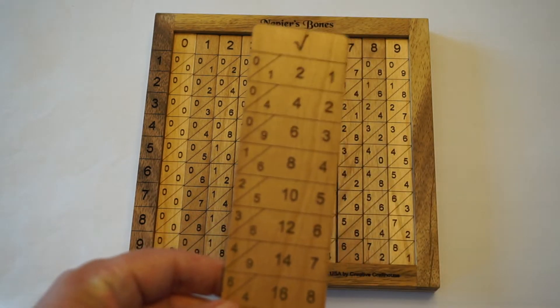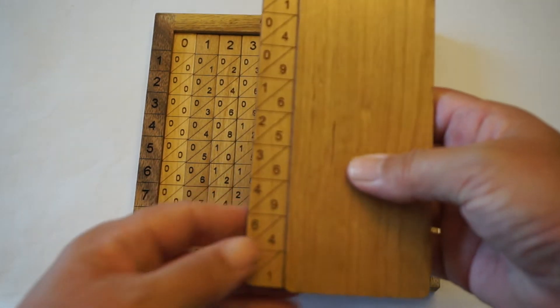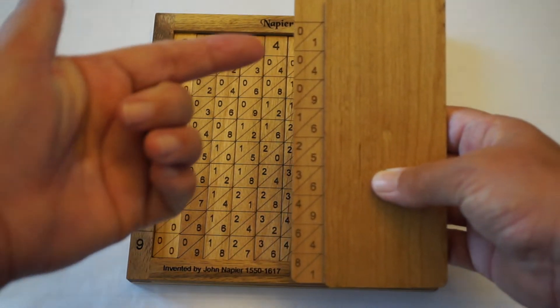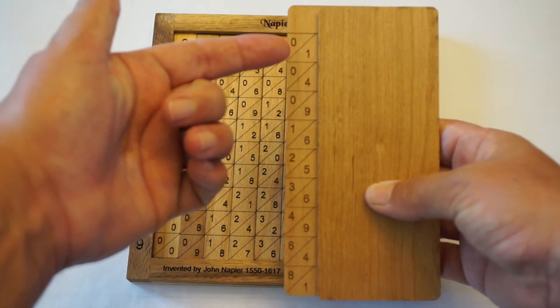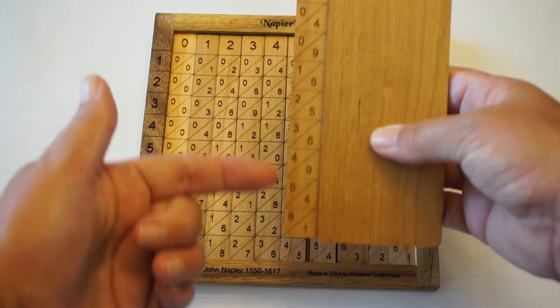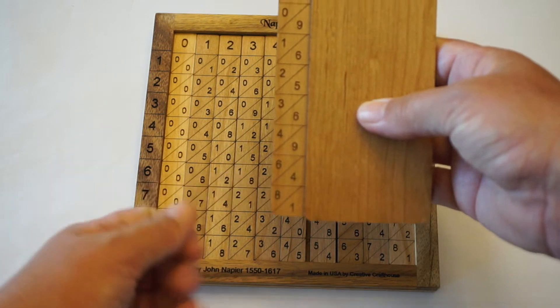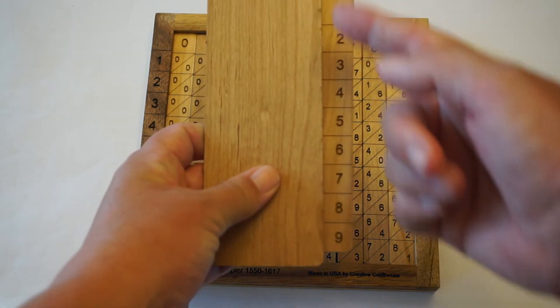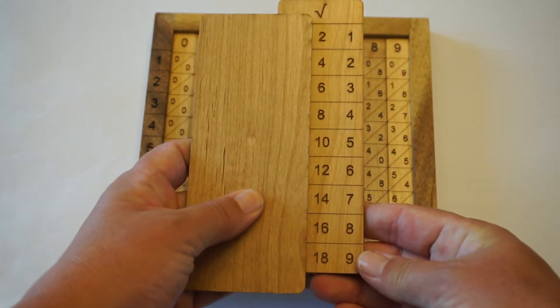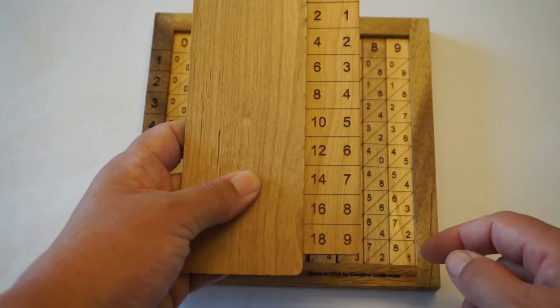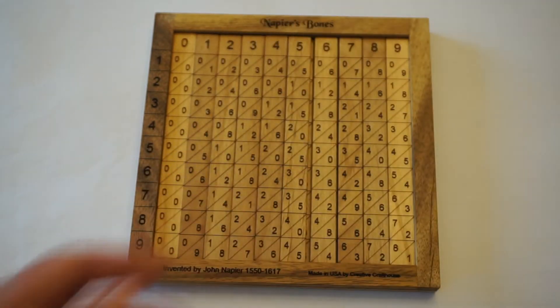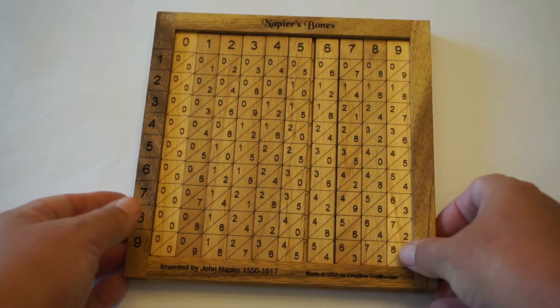Now, actually, the only part of this rod that we really need in order to do our calculations is the first column, and you'll notice that this has all the squares. 1 squared is 1, 2 squared is 4, 3 squared is 9, all the way down to 9 squared is 81. The other two columns are simply the digits from 1 through 9, and then they're doubles, and that's because part of the process involves multiplying by 2, and the point of Napier's bones is that you don't have to know your multiplication tables at all, not even knowing how to do times 2.